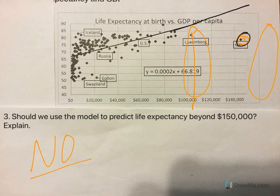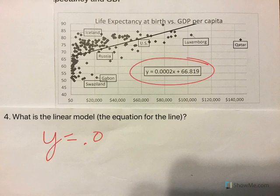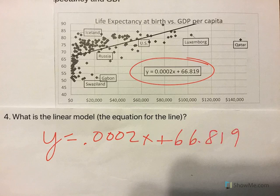Maybe I should change my first answer to weak at this point. Maybe not. What is the linear model or the equation for this line? It's right here: y equals .0002x plus 66.819. So for every dollar you go up, your life expectancy goes up .0002 years, which is not very much.